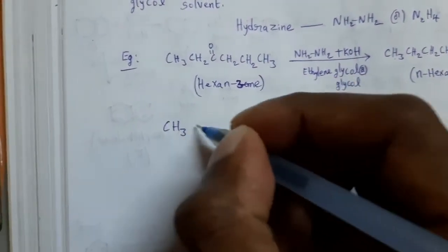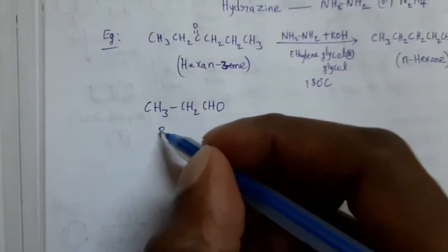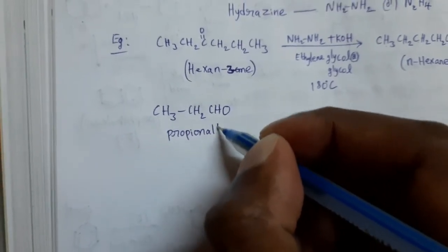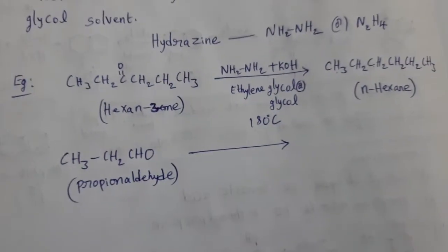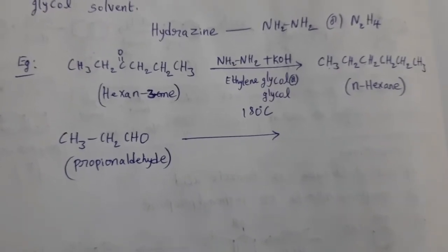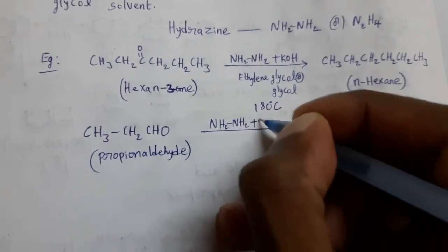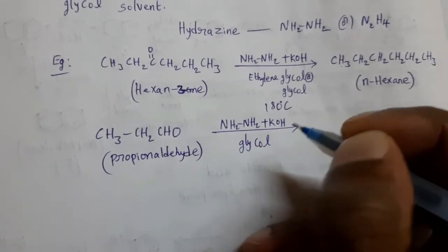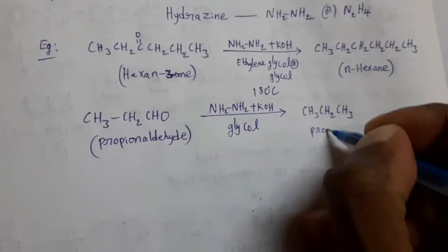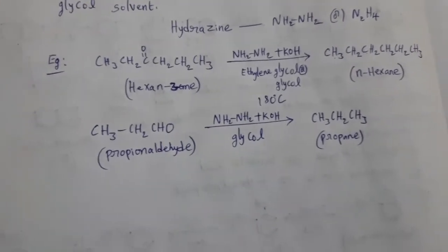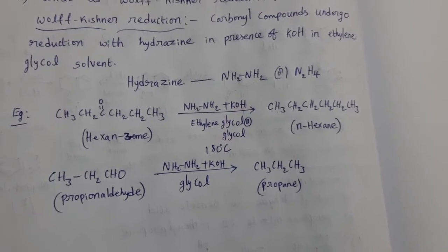Take an aldehyde example: CH3CH2CHO, which is propionaldehyde. It undergoes Wolf-Kishner reduction, and we get the product CH3CH2CH3, which is propane. In this way, both aldehydes and ketones undergo Wolf-Kishner reduction to form alkanes.